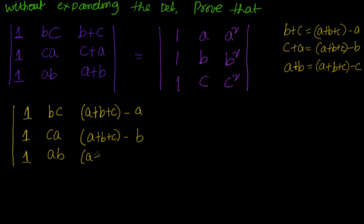The third one is A+B+C minus C. Now this is how it looks like. Are you comfortable with that? What I have done instead of having B+C, C+A, A+B, I just made them as A+B+C minus A, minus B, minus C.